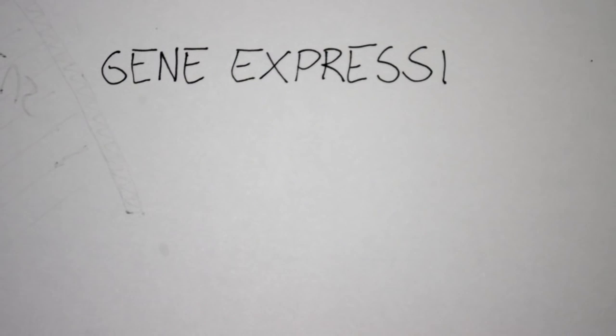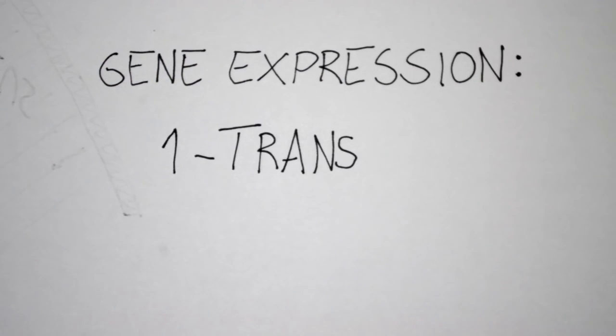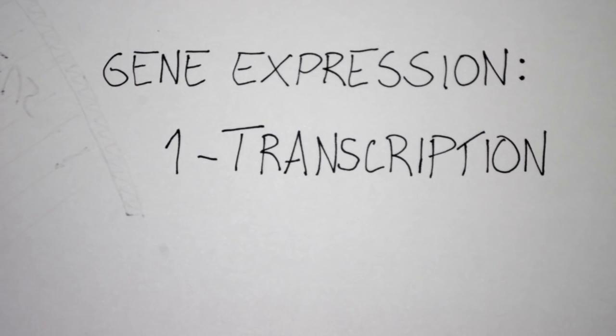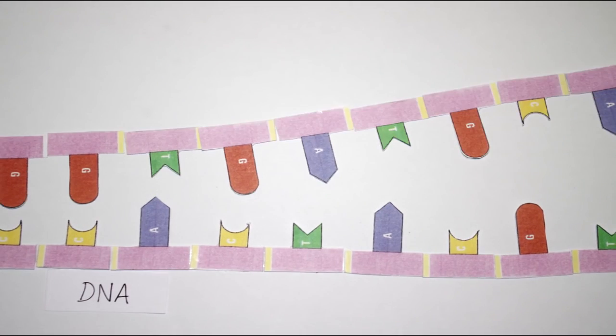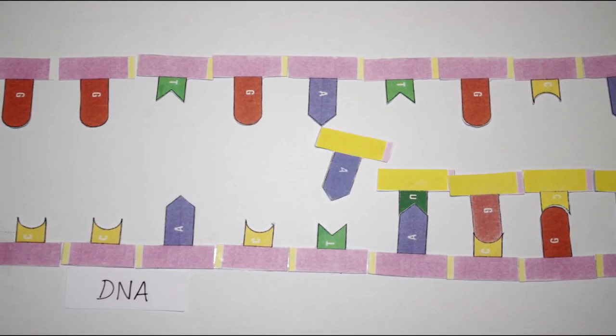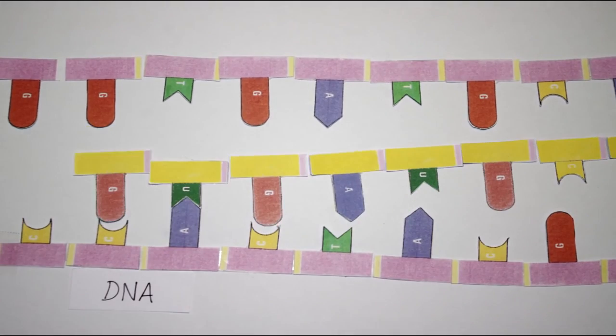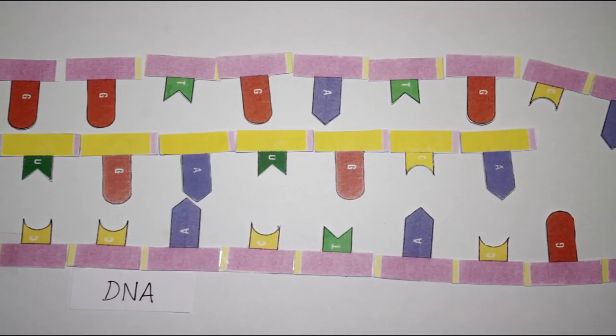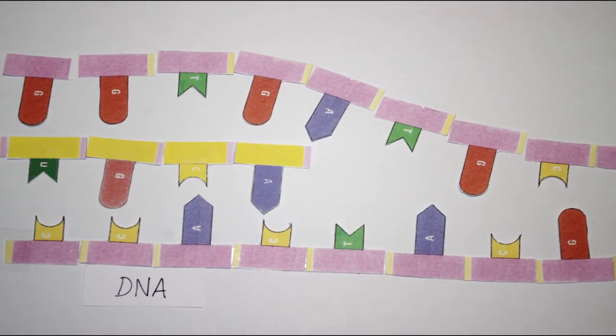So, for the gene to be expressed, two phases are necessary. First, the transcription, when a segment of DNA is copied into RNA. As you can see, only the upper strand of DNA is being copied, and uracil is replacing thymine in the RNA strand.